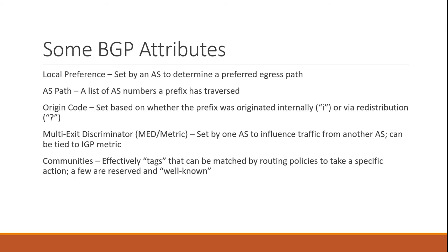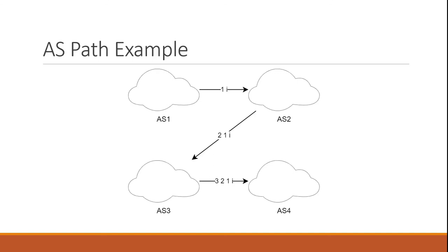There are a few well-known communities reserved for specific purposes — these don't need to be matched by a particular policy; the router will take the appropriate action on its own. Here's the example of AS path I mentioned previously. You'll notice I've included the internal origin code 'i' at the end of the advertised path. This is the format you'll typically see in show IP BGP output on Cisco routers. Note that the AS number is prepended when the prefix is advertised, not when it's received.